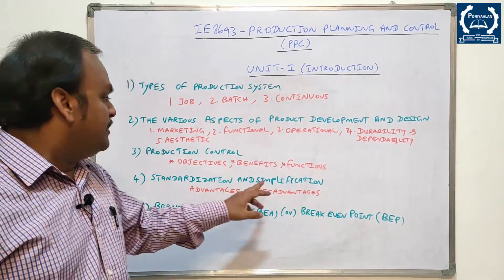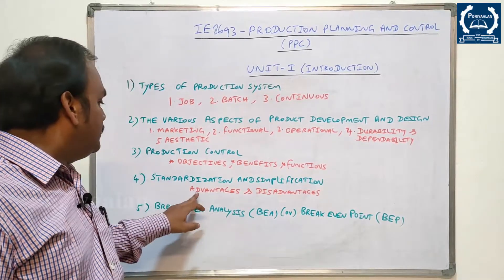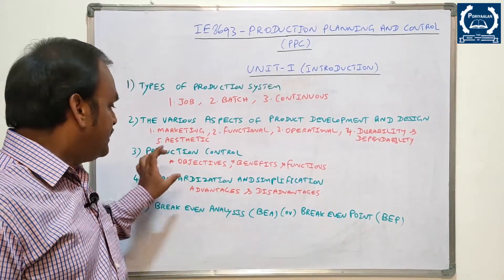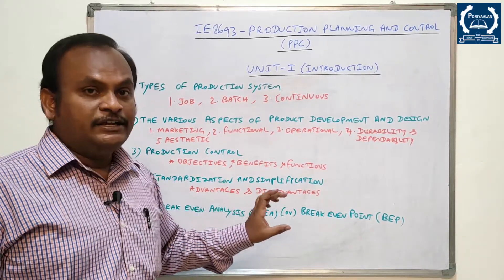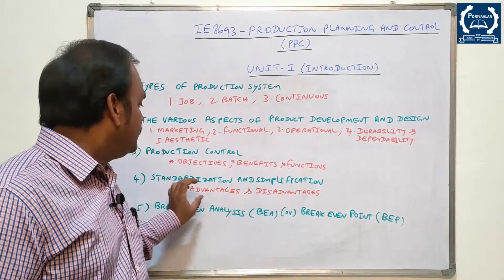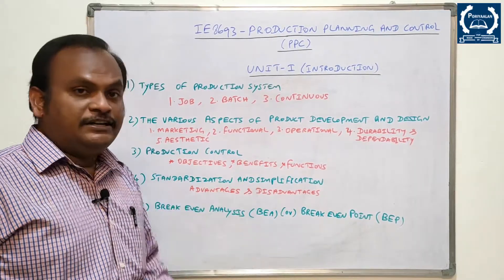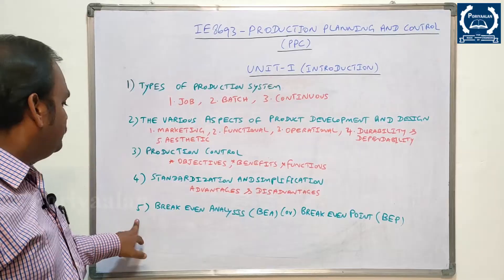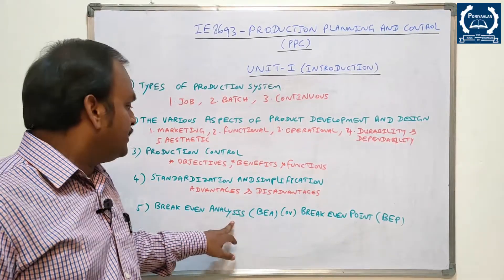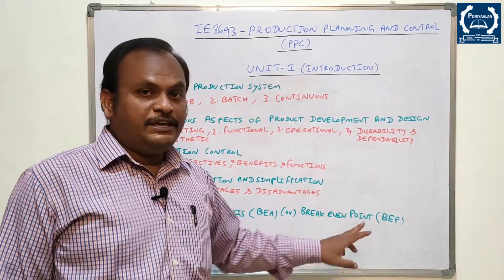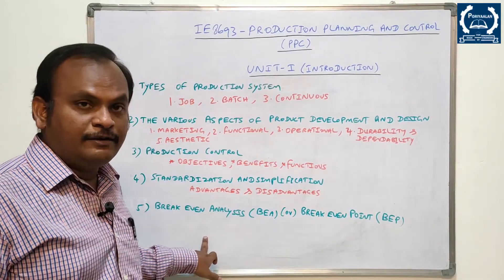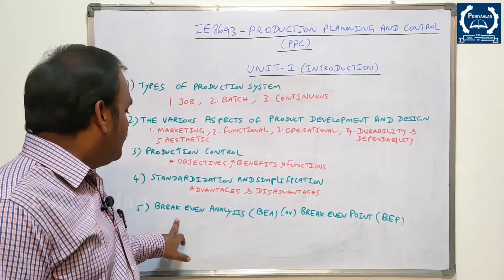Fourth question: Standardization and simplification - advantages and disadvantages. That is a brief introduction covering advantages and disadvantages. Fifth question: Break-even analysis, also called BEA or break-even point. Here is the chart for break-even analysis.